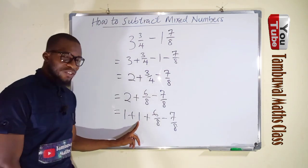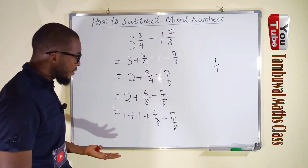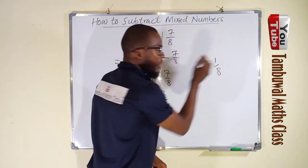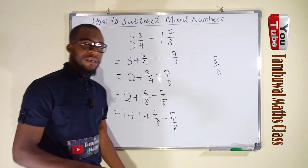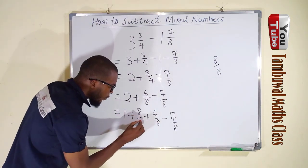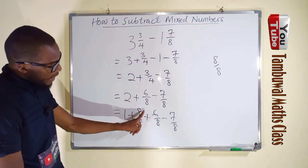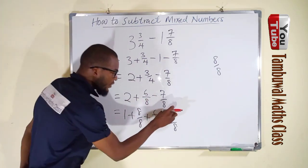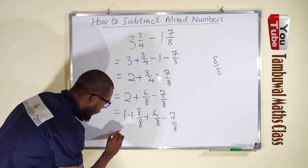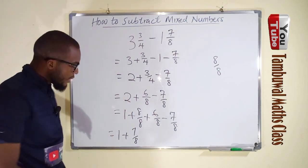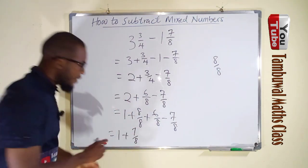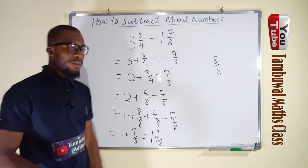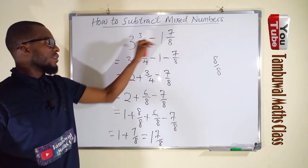This borrowed 1 can be written as 1/1, and since our denominator is 8, we write it as 8/8, because 8/8 equals 1. Now we freely add numerators: 8 plus 6 is 14, then 14 minus 7 is 7. So we have 1 plus 7/8. Since this is a sum of a whole number and fraction, our final answer is 1 and 7/8.